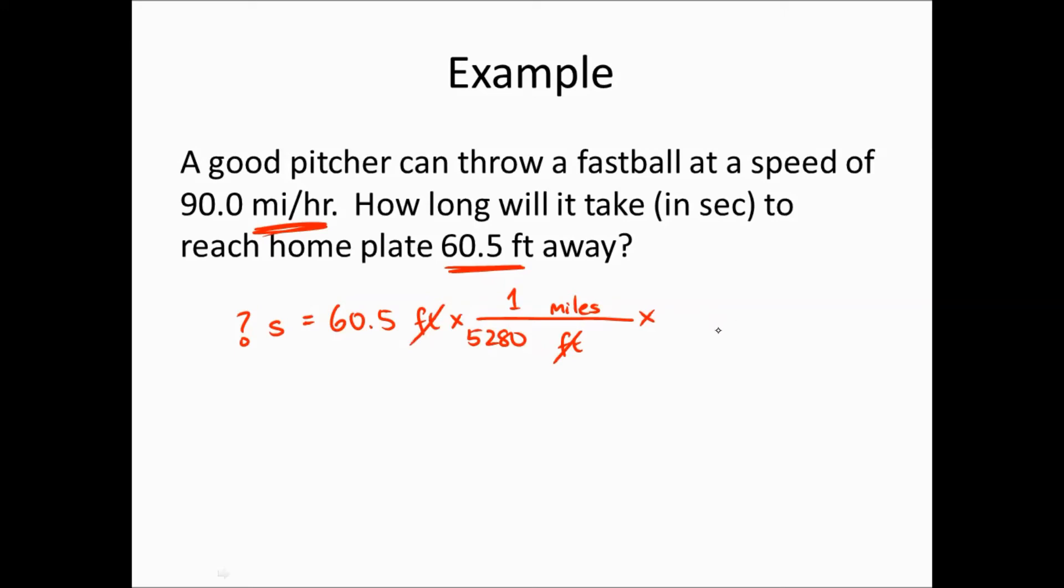Then we know that the fastball moves at 90.0 miles per one hour. So here, even though this is not actually a unit conversion, we can set this up as a conversion factor. Finally, I know there are 3,600 seconds per hour and I get 0.458 seconds as my answer.